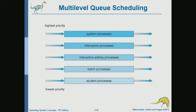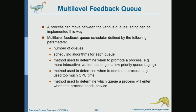Here is an example of different levels of priority a system may have: system processes have the highest priority, then user interactive processes, then interactive editing processes, then batch processes, with student processes at the lowest priority — they're just trying to tease students.